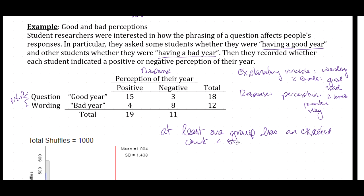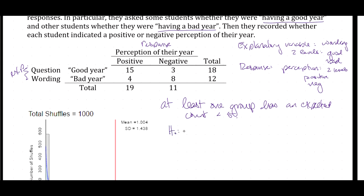How could we design a simulation study to model the null hypothesis? Remember, our null hypothesis is that there is no association between wording and perception — that is, it does not matter how we phrase the question; students are going to reply according to their positive or negative perception of the year independently of the phrasing. So it doesn't matter if we ask about a good year or a bad year — students will reply true to their actual perception.